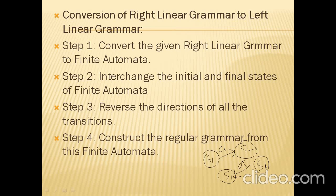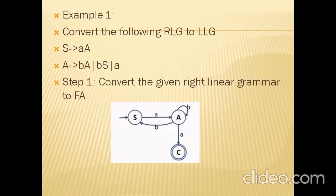Here is an example: Convert the following Right Linear Grammar to Left Linear Grammar. The grammar contains production rules: S tends to A, A; capital A tends to small b, capital A; small b, capital S; and A. The first step is to construct a Finite Automaton for the given grammar. S is the starting symbol.